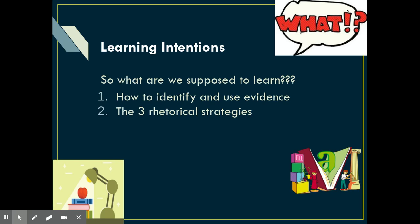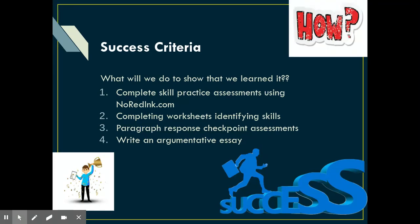Our learning intentions for today remain the same: how to identify and use evidence and the three rhetorical strategies. How you are going to show that you've learned this is by completing tasks on No Red Ink, completing worksheets, and identifying the skills. You'll have paragraph response checkpoint assessments coming up, and at the end of this unit, you will write an argumentative essay showing all of these skills.